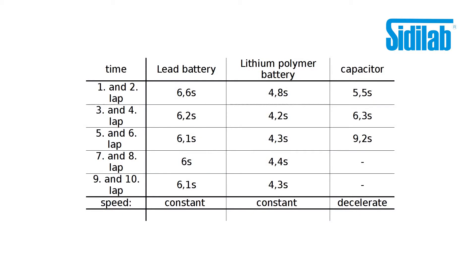In summary for our experiment, the two batteries provide a constant speed whereas the speed continues to decrease with the capacitor. Furthermore, the lead battery produces a lower speed than the lithium polymer battery.